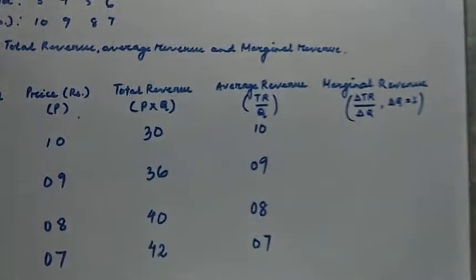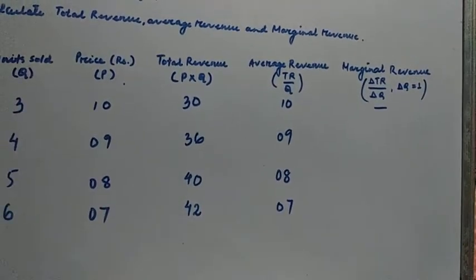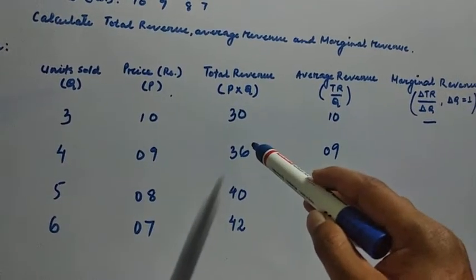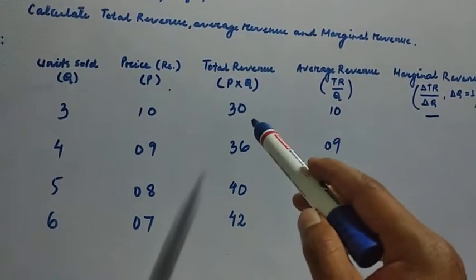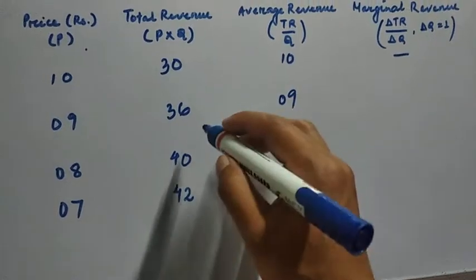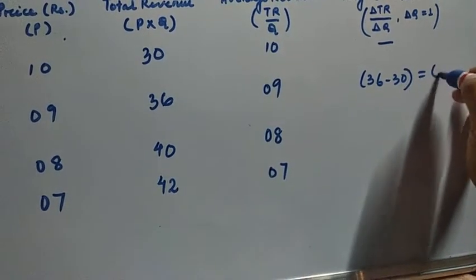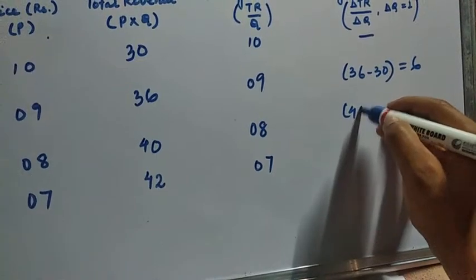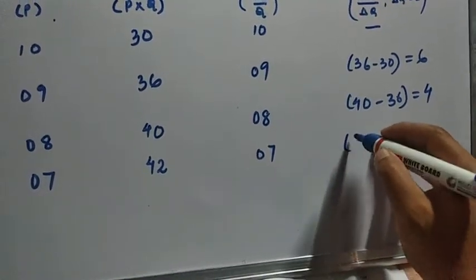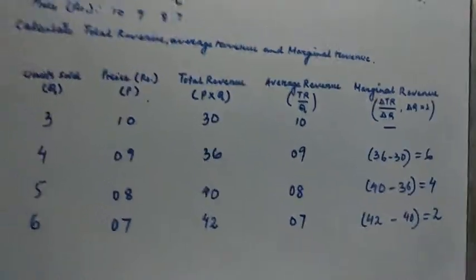Now how do we find marginal revenue? The first entry will be blank. We find marginal revenue by taking the difference of successive total revenues: 36 minus 30 equals 6, then 40 minus 36 is 4, and 42 minus 40 is 2. That is how we obtain marginal revenue.